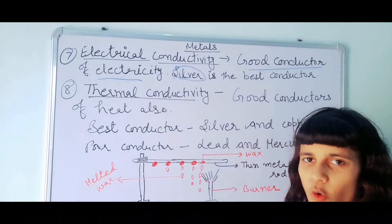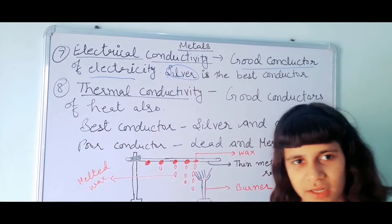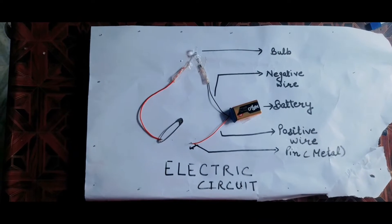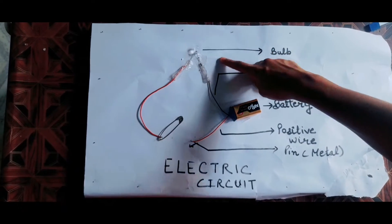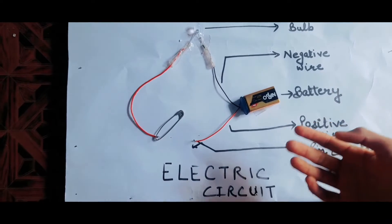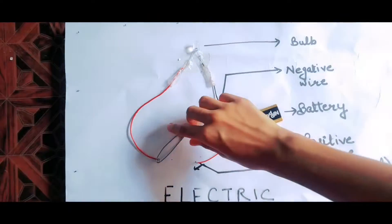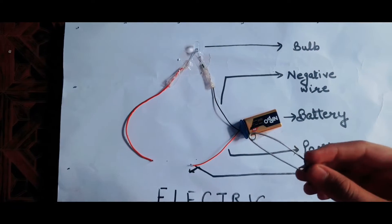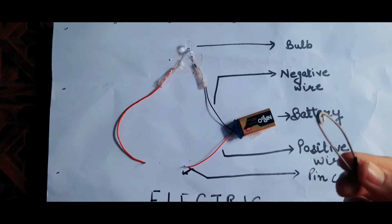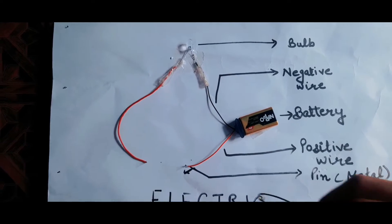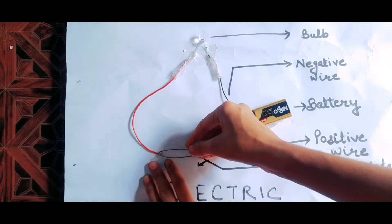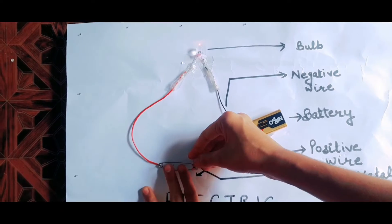Let's do an activity which shows electrical conductivity. This is my electric circuit — you can see here is a bulb, a battery, wires, and a safety pin. I have used this safety pin as a metal in this circuit. As you can see, there is no wire connection here, and when I connect this pin with the other end...